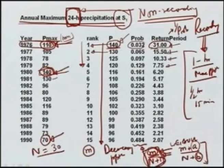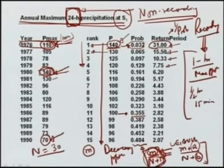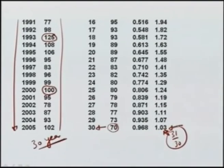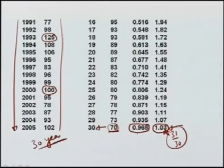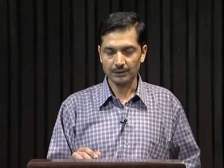This table shows that rainfall of 140 mm has a probability of occurrence of 0.032 in a year. A rainfall of 100 millimeters has a 35.5 percent chance of occurring in a year, and on average will occur once every 2.82 years. A rainfall of 70 mm or more has a probability of occurrence of 96.8 percent in a year, and on average will occur once every 1.03 years.